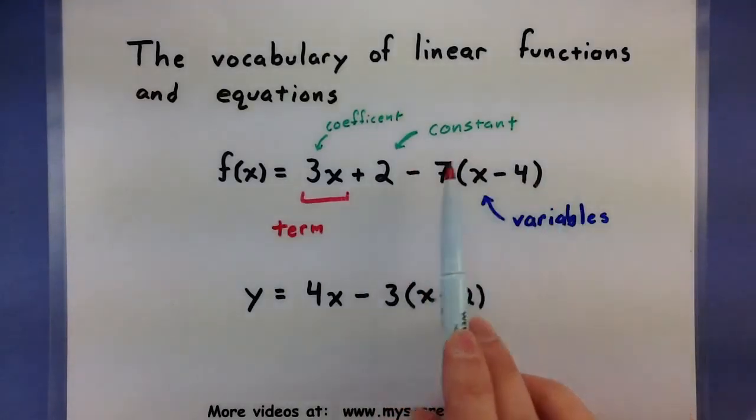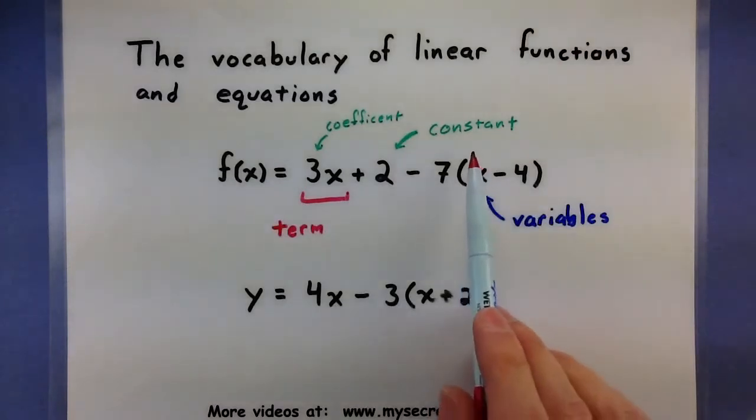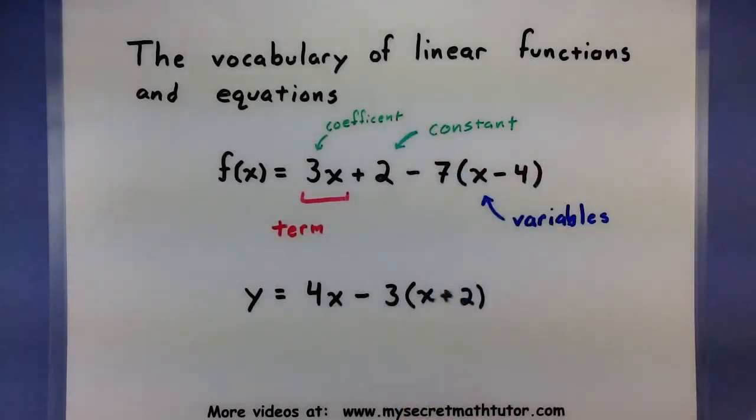This entire piece, since we're subtracting all of it, is also a term. It's just a fairly large term: 7 multiplied by x minus 4. Be careful, the 7 by itself is not a term because it is actually being multiplied by something else. So, that's why we would take the entire thing as a term.